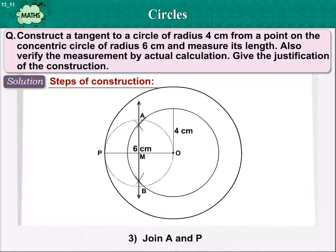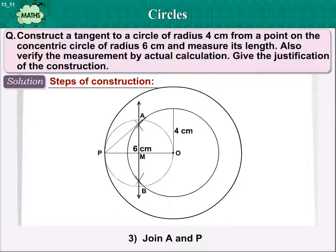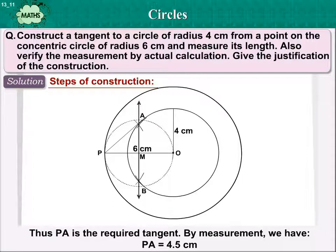Number 3: Join A and P. Thus, PA is the required tangent. By measurement, we have PA is equal to 4.5 cm.